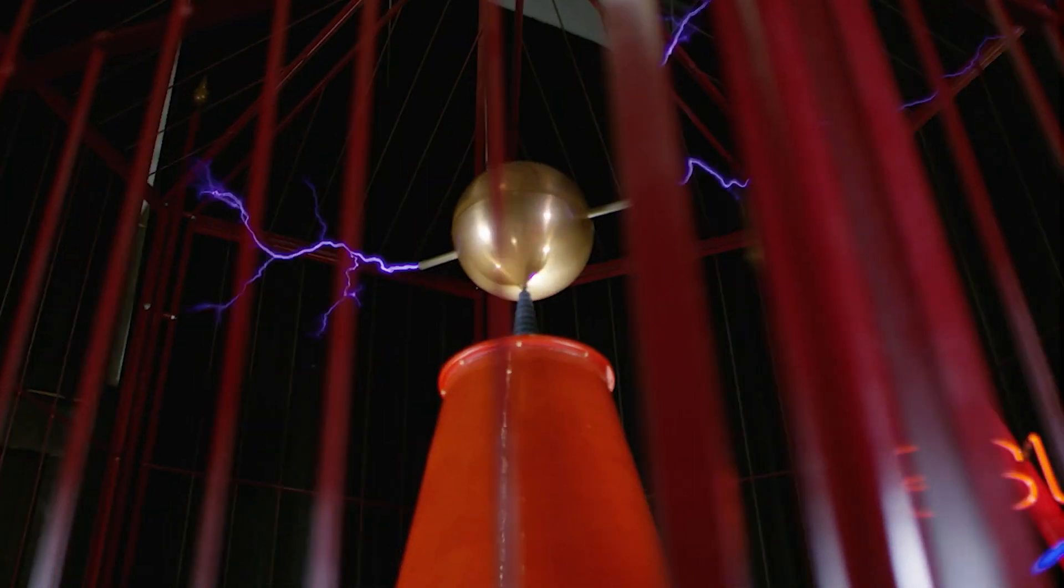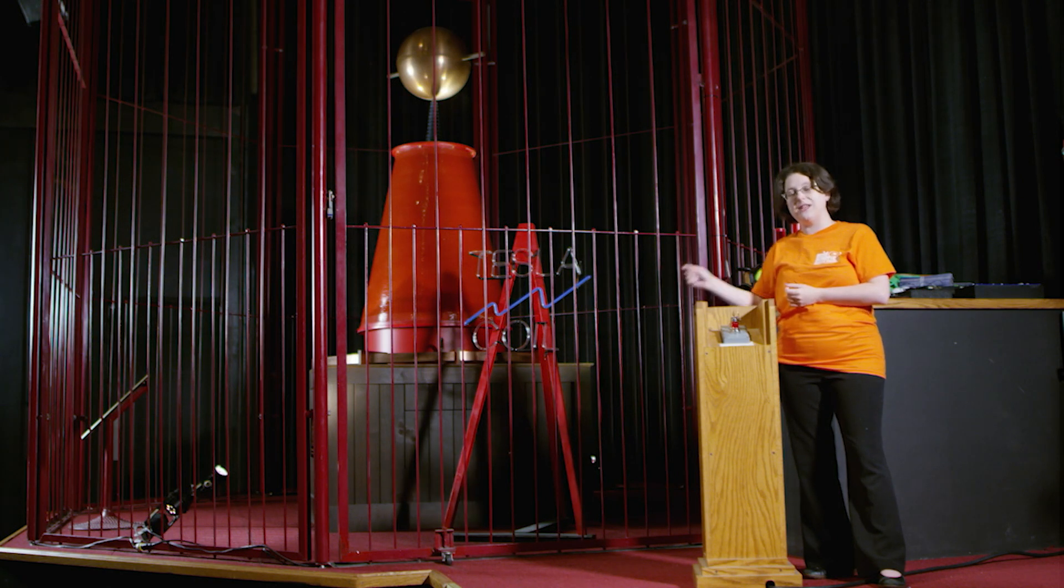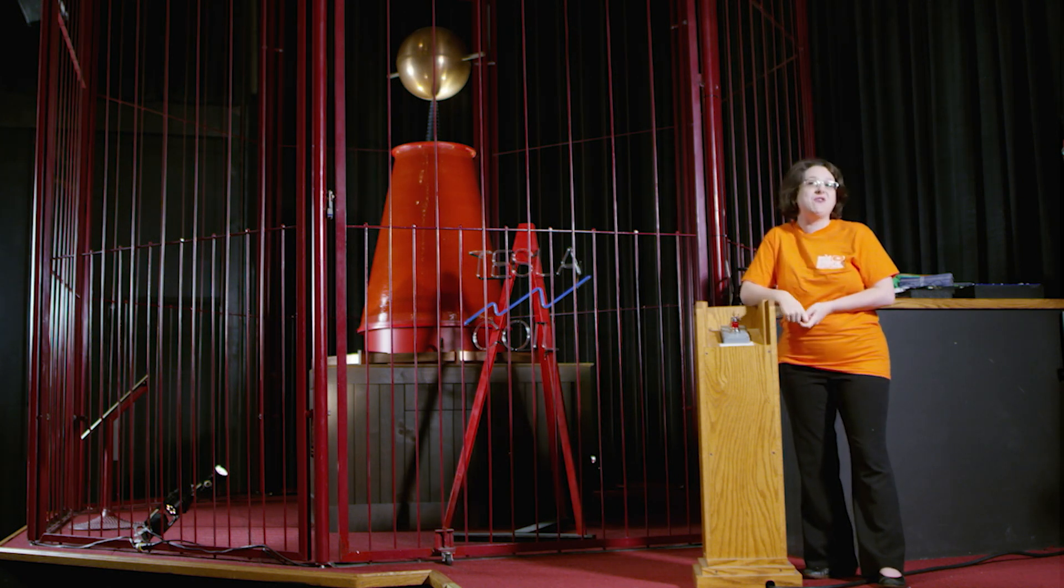And that two and a half tons is a beacon. So the lightning or the electrical discharge hits that metal cage and takes it all the way down into the ground. And we are perfectly safe outside.